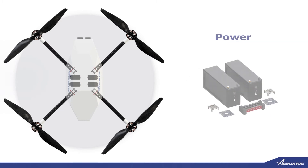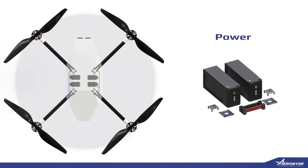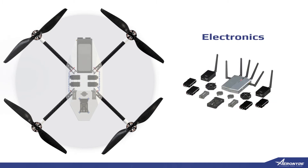The powering system is composed of the batteries, distribution boards, and cables. Most drones are electric, but other configurations include combustion engines, hybrid, natural gas, and solar power.